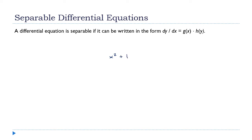You know how to do this — it's x to the third over three plus x. If you think of this as a differential equation, say I have the equation y prime equals x squared plus one. What I did here is I said that if the derivative of y is x squared plus one, then y must be x to the third over three plus x. This is an example of a very basic differential equation.